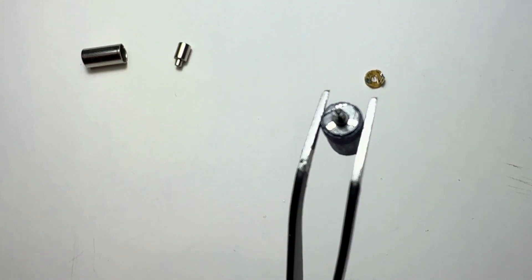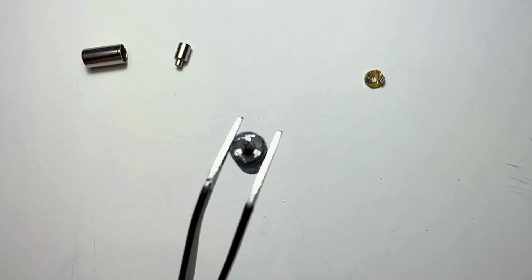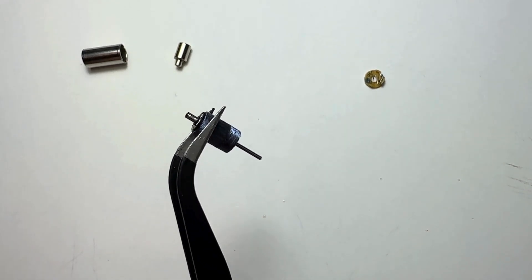Now, let's consider the commutator. It is mounted on the rotor, and its function is to reverse the direction of the current in the coil windings, ensuring continuous and controlled motion.